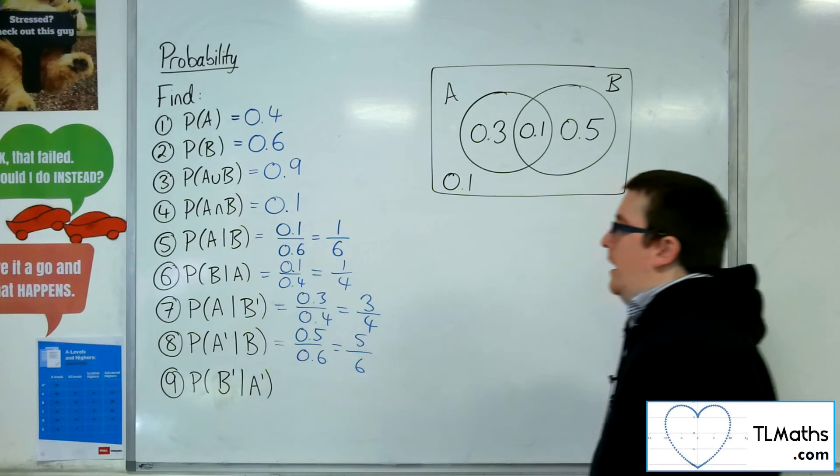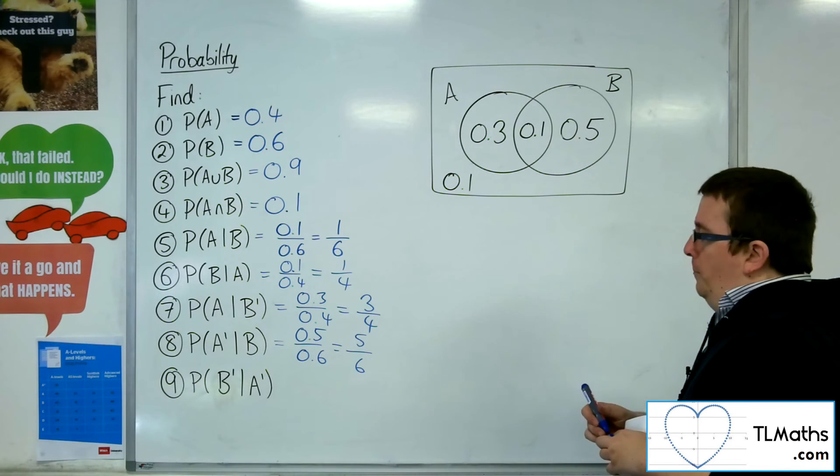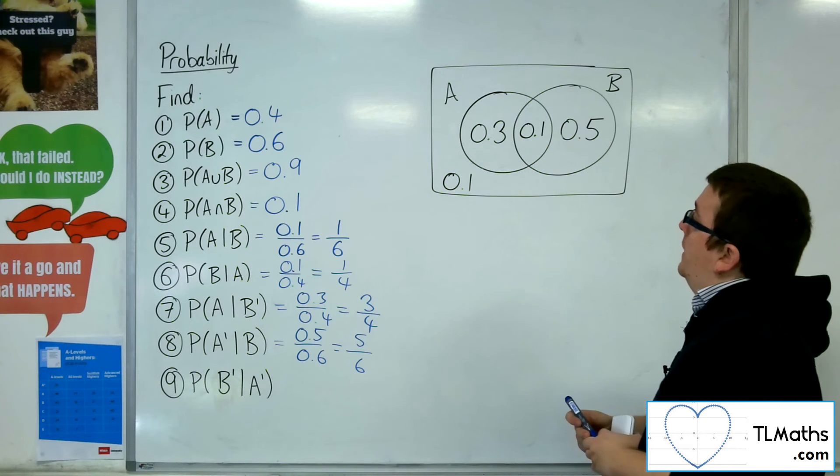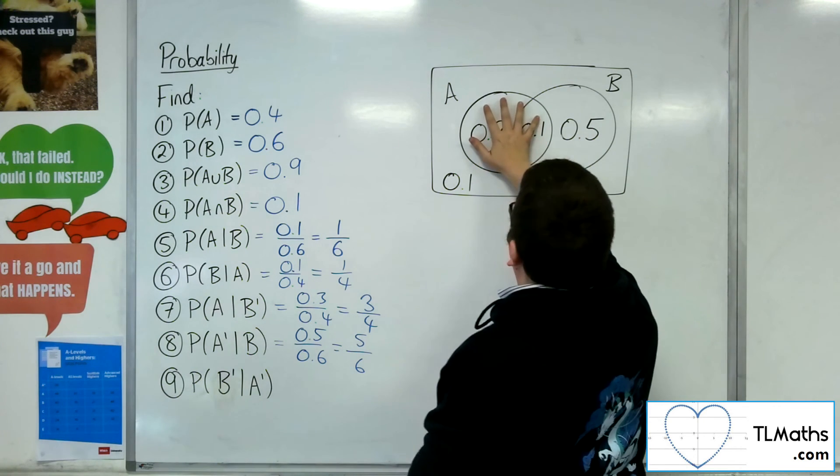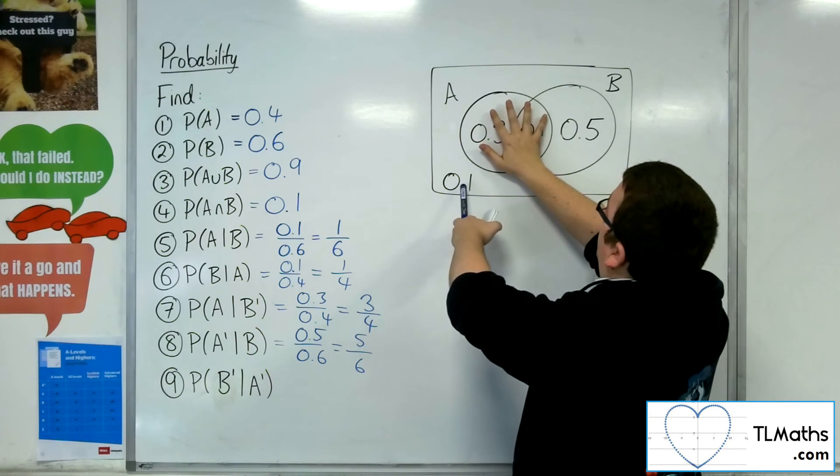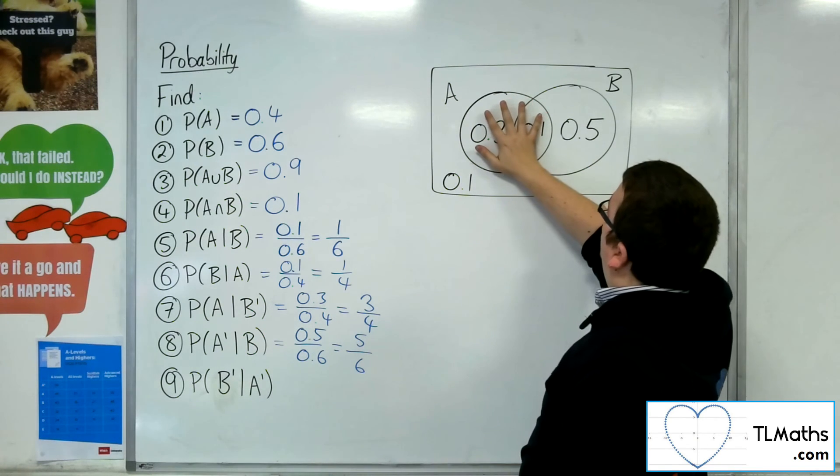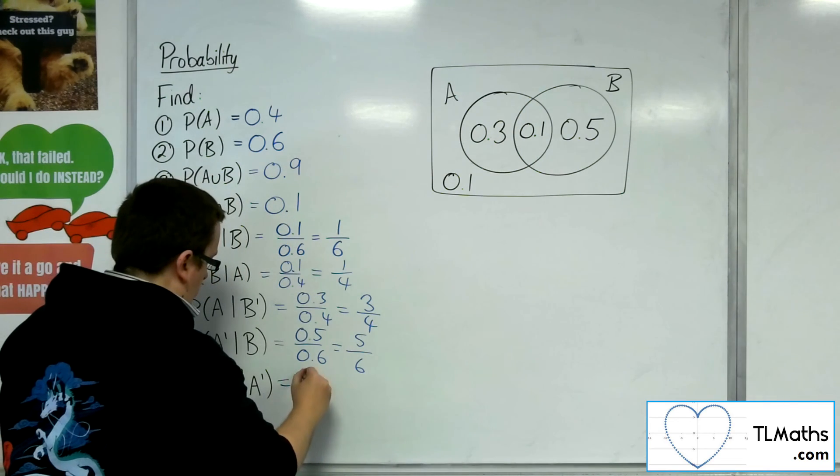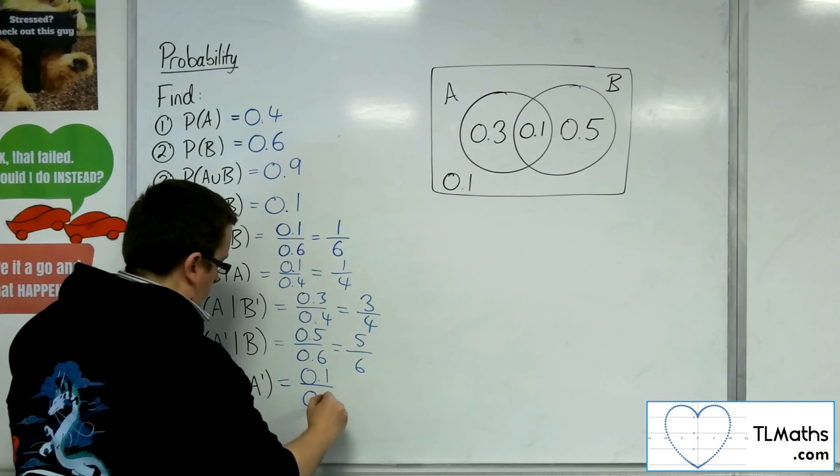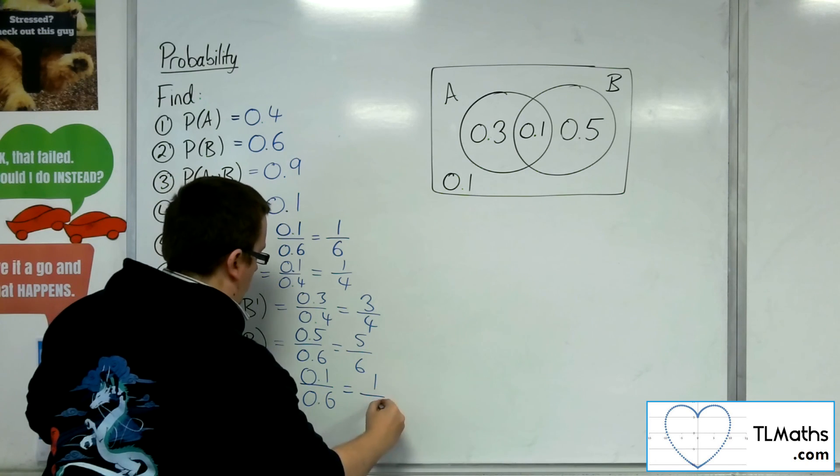And then number nine, the probability of not B given not A. So we know it's not A, what's the probability of not B? Well, it's 0.1 out of the total that you now see, so 0.6. So 0.1 over 0.6, so one sixth.